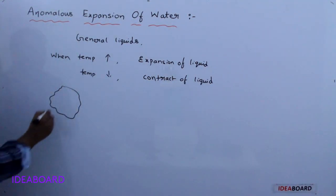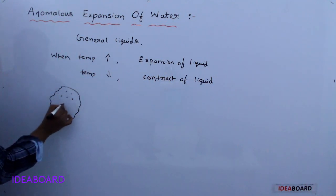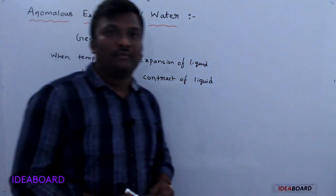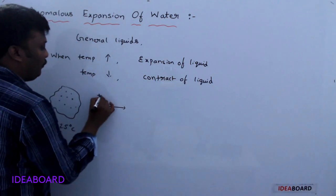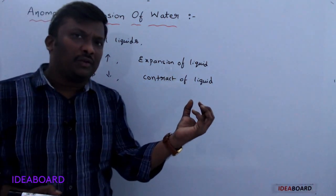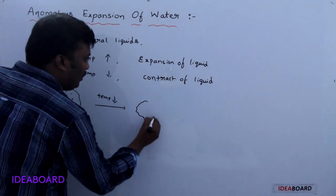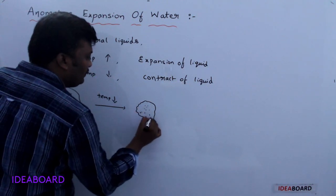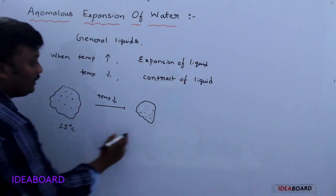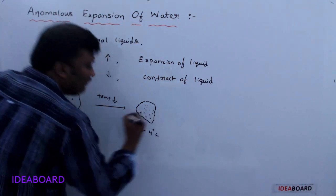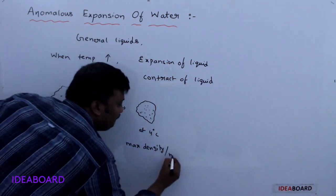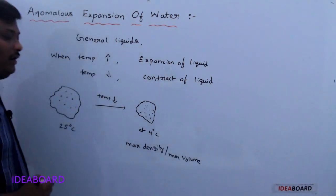Let us take a certain amount of water containing water molecules at room temperature, 25 degrees Celsius. Now when the temperature of water is reduced, all the molecules come closer together, so their volume decreases. When you reduce the temperature to 4 degrees Celsius, water has maximum density or minimum volume.